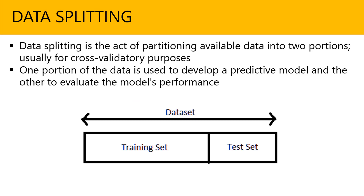Data splitting: once you've shuffled the data, data splitting is the act of partitioning available data into two portions, usually for cross-validation purposes. One portion of the data is used to develop a predictive model, and the other to evaluate the model's performance — so you have the training set and the test set. It's typically about a 70-30 split, or 60-40.